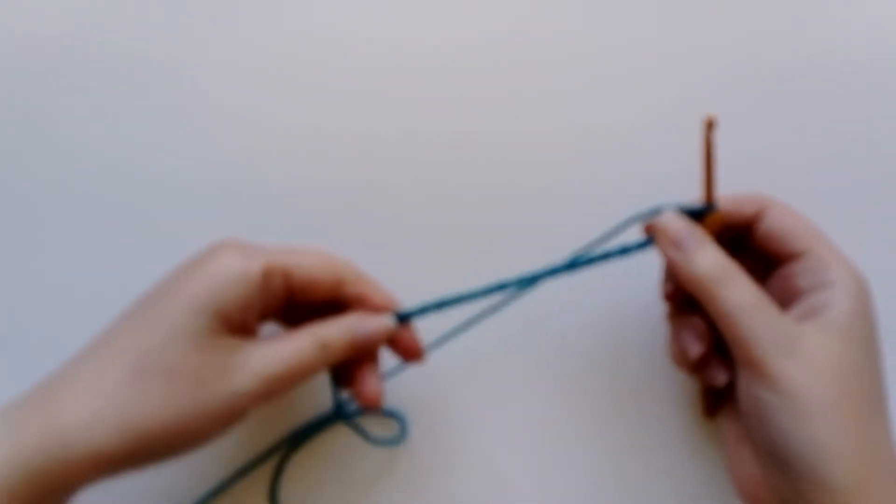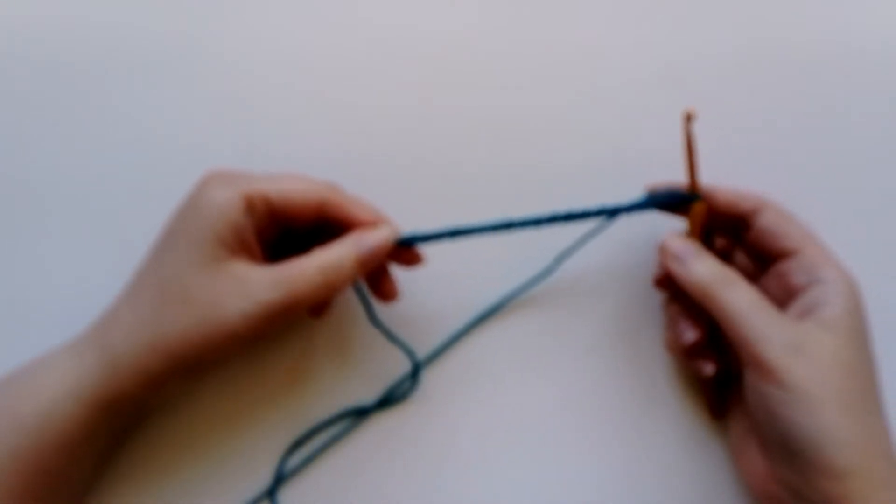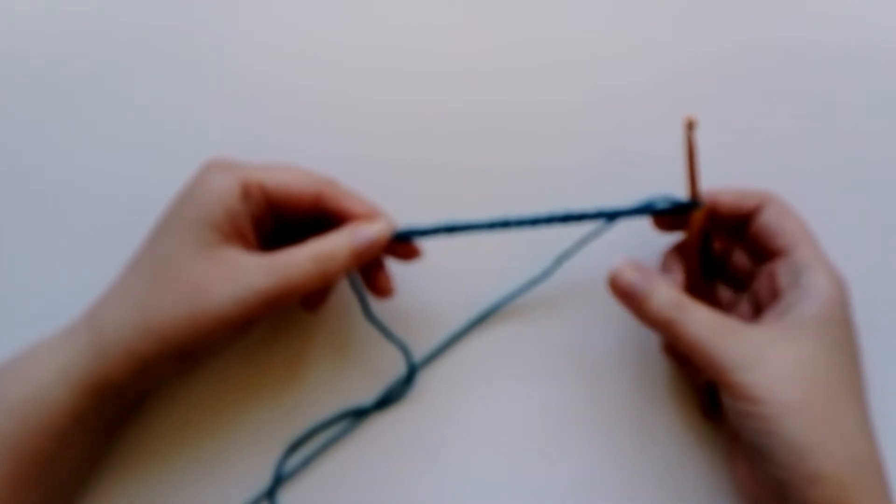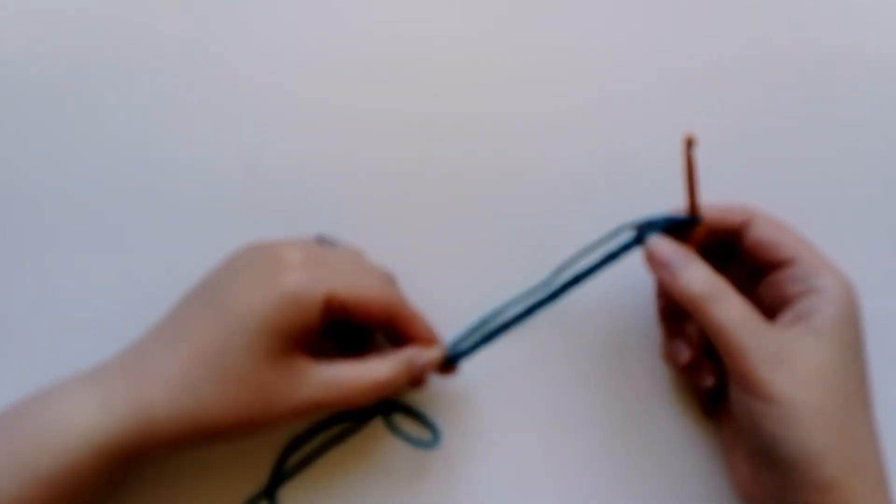So for this project, I've already done a short little chain, about 20 chain stitches. If you haven't already watched that video, go back and watch it unless you already know how to do it, in which case stay where you are. I'm going to show you how, first of all, to work the double crochets into this foundation chain, and then what it looks like when you're working them into previous rows of double crochet stitches.